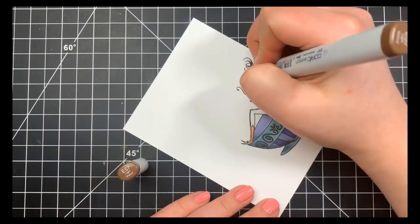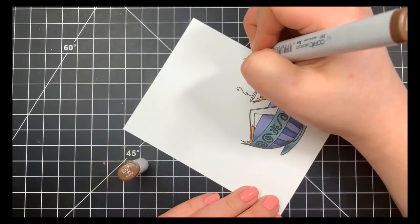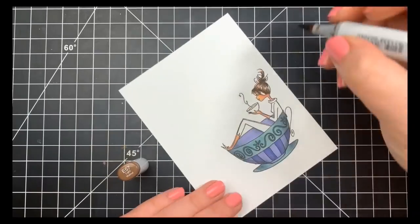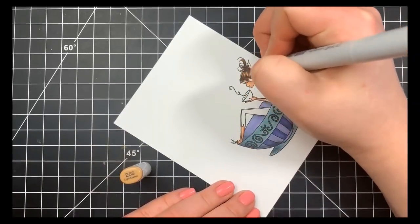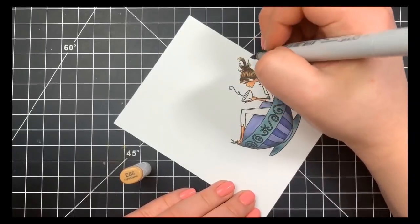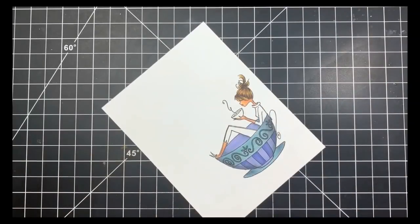Next I'll go in with the E57 and I'm going to just extend those flicks out a little bit further. Again, I'm barely touching the tip of the marker to the paper here. And finally I'm going to go in with the E55 and just fill in those highlight areas. I go over these areas very quickly because I want to maintain that highlight and I don't want to overblend here. I want to see those flick lines.